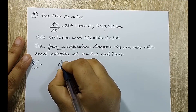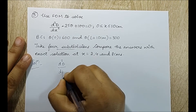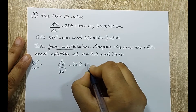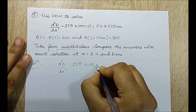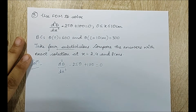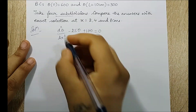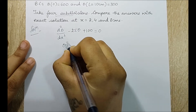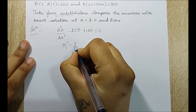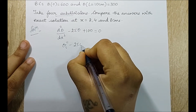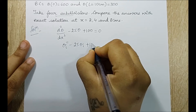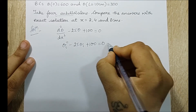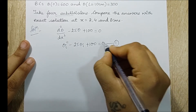We start with the governing equation: d squared theta upon dx squared minus 25 theta plus 100 equals 0. Converting to index notation, this becomes theta_i double dash minus 25 theta_i plus 100 equals 0. This is equation 1.